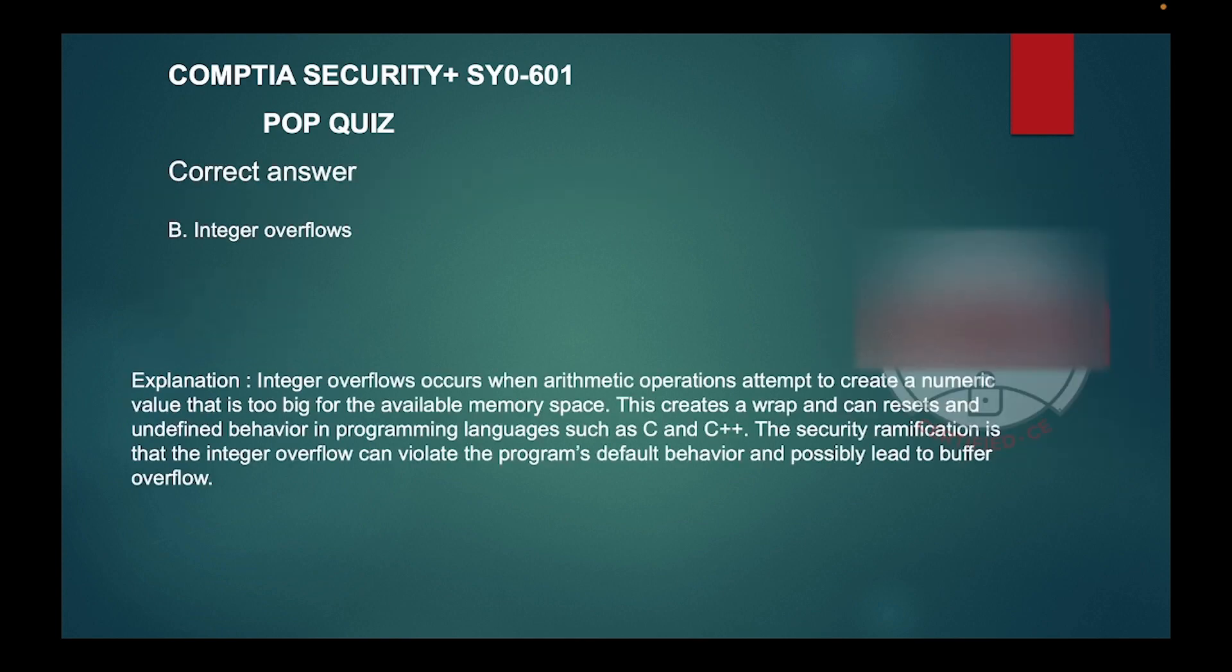The correct answer is B: Integer overflows. Integer overflow occurs when arithmetic operations attempt to create a numeric value that is too big for the available memory space. This creates a wrap and can cause undefined behavior in programming languages such as C and C++. The security ramification is that integer overflows can violate the program's intended behavior and possibly lead to buffer overflow.